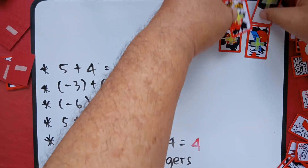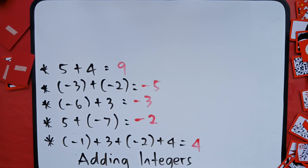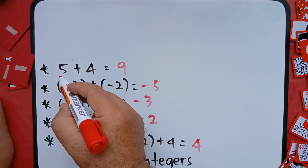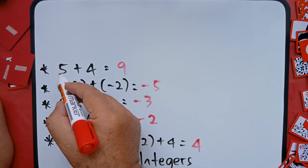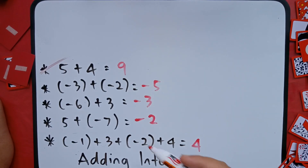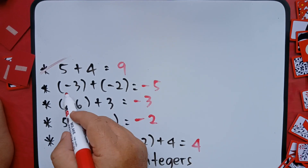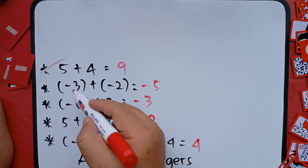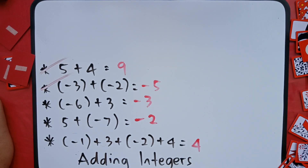Okay, so let's check. The first rule in adding integers: when two integers have the same sign, you have to add the absolute value and copy the common sign. So positive five plus positive four — same sign, add the absolute value: five plus four is nine, then copy the common sign. Check. Next: negative three plus negative two — both have the same sign, so add the absolute value: three plus two is five, and copy the common sign. Check.